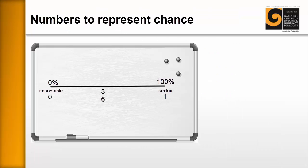Now, going back to our continuum on the board, we can write 3 6th and where it fits on the board. So the learners can clearly see that this is halfway and you might write in 50% as well, or 0.5 and begin to make connections between these different representations of chance.